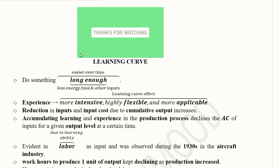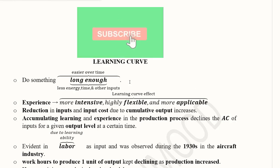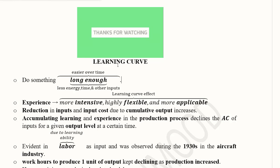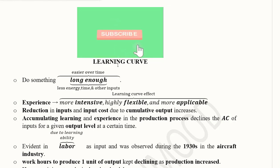In addition to economies of scale, there is another factor that can lead to a decline in the average cost of production by a firm. It is known as the learning curve, and it has a very basic concept working behind it. As the name goes, it's a curve that gets engendered because there is a process of learning — and this learning is in the labour of the firm.